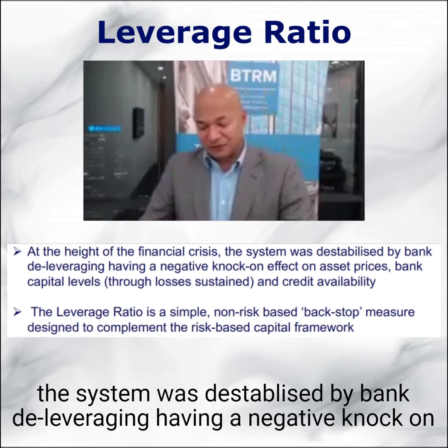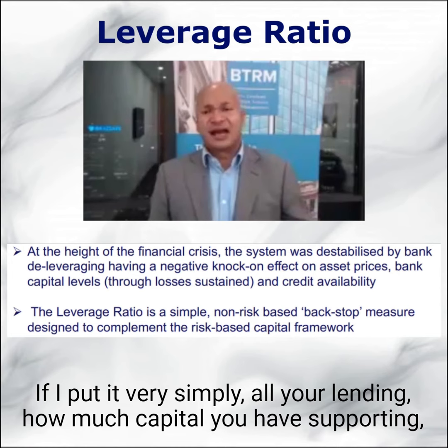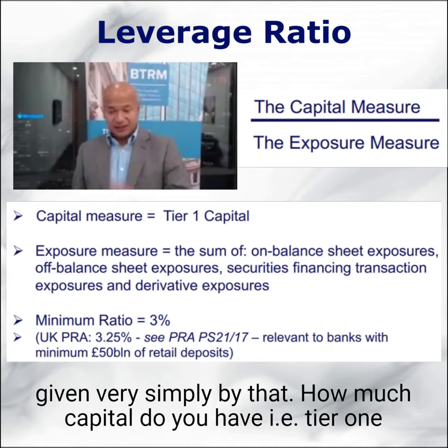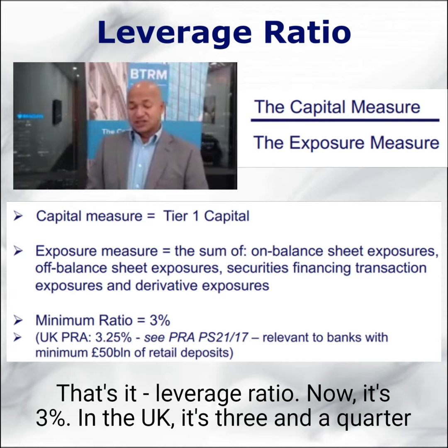The leverage ratio is another minimum capital ratio, just without any risk weighting. Simply put: all your lending — how much capital have you got to support it? The notional amount of your lending — that's the leverage ratio. It's given by how much Tier 1 capital you have divided by the notional amount of lending you have made.